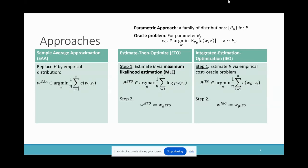The third approach is Integrated Estimation-Optimization (IEO). This approach estimates theta by leveraging both data and information from the optimization problem. It selects the model parameter theta that, via the oracle problem, gives rise to the decision with the best empirical average cost. We let W_IEO be W_theta_IEO as the IEO solution.